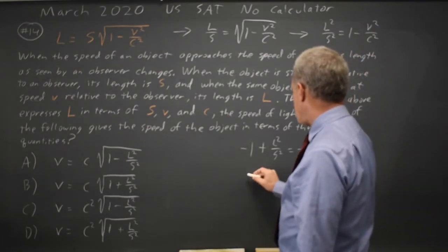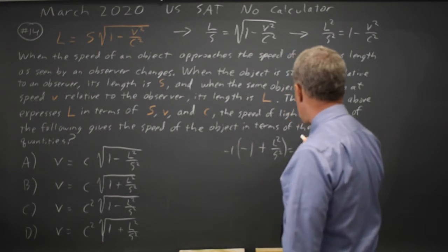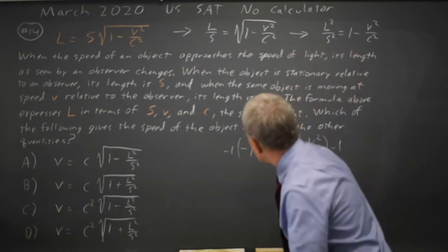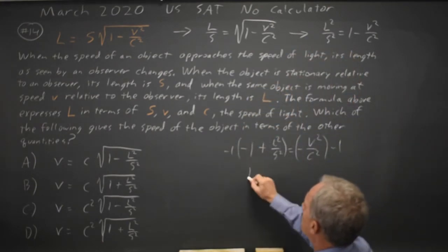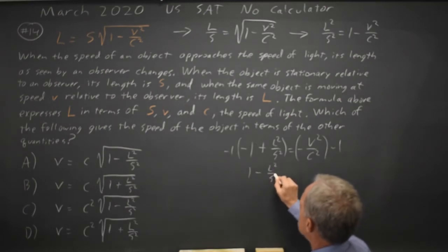Let's multiply both sides by negative 1. So I have 1 minus L squared over S squared equals V squared over C squared.